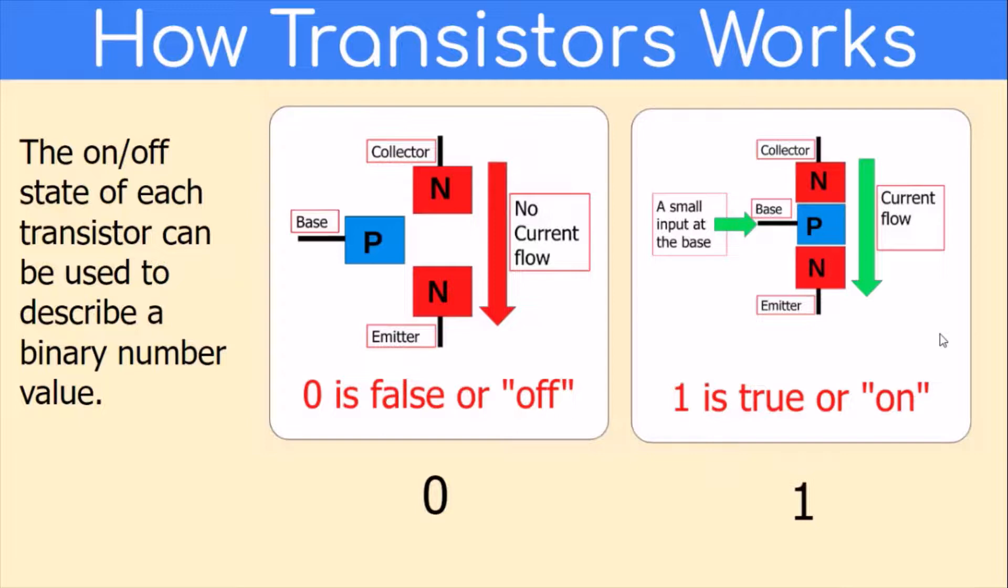False or off is zero, and one is true or on. So we've got zero and one. You can see two transistors and two binary numbers.